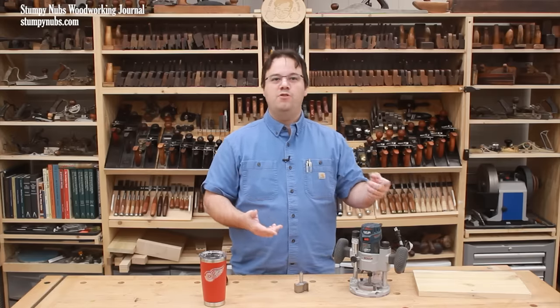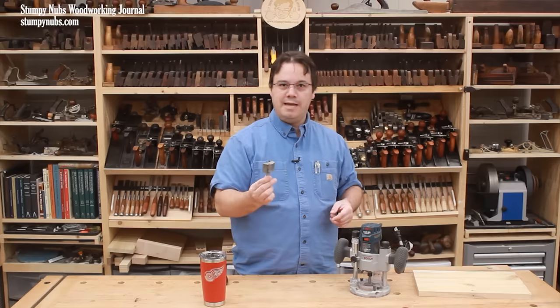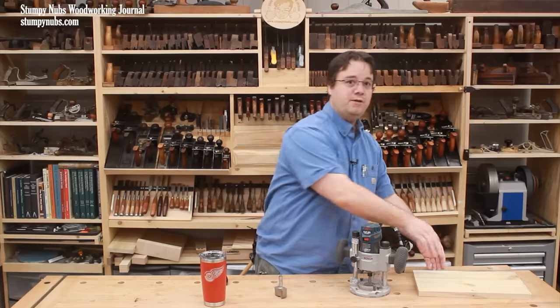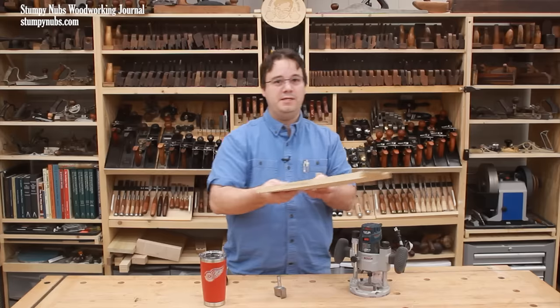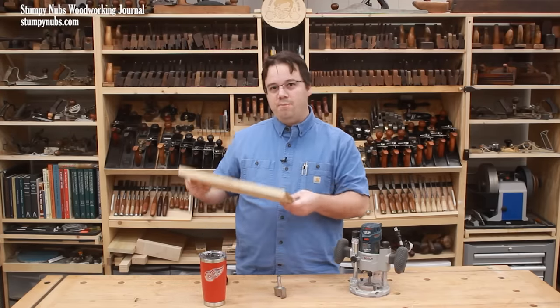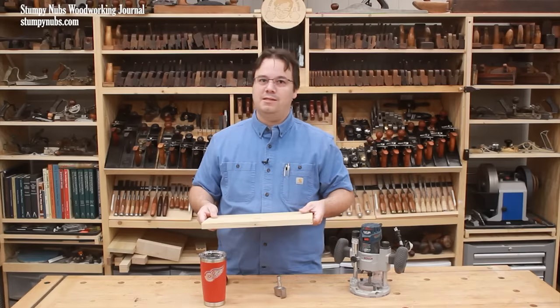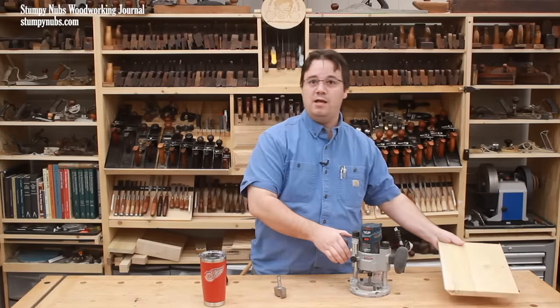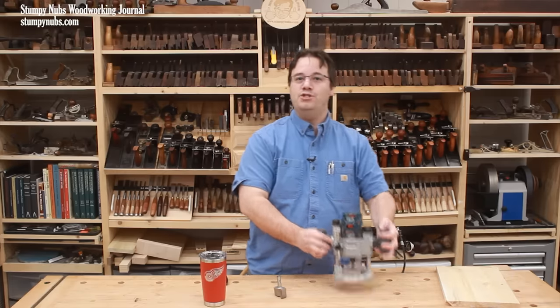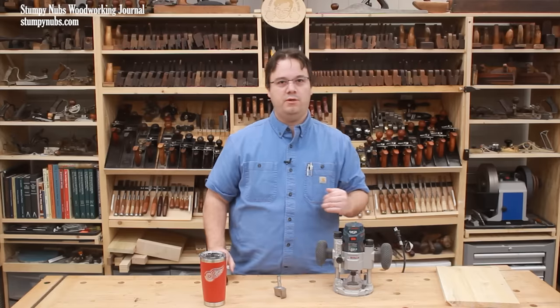At a router table, the directions all change because the bit is turned upside down, and it can be difficult to safely hold a workpiece in a climb cutting situation at the router table. If the bit gains too much traction, a router table can pull your hands with the workpiece into the cutter, whereas with a handheld router you're holding onto the machine instead of the wood. I'm not saying you can't get hurt with a handheld router, I'm just saying climb cutting is much more dangerous at the router table.